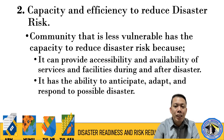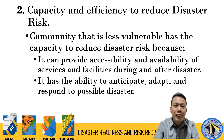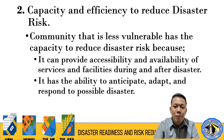The second factor is the capacity and efficiency to reduce disaster risk. While the first factor is about exposure and density, this one is about the capacity of the population and community to prepare. A community that is less vulnerable has the capacity to reduce disaster risk. One reason is that it can provide accessibility and availability of services and facilities during and after a disaster.